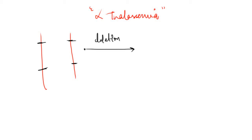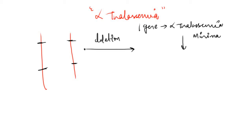Depending upon how many genes are deleted, there are various manifestations. If one gene is deleted, there will be mild decreased production of alpha chain and that is called alpha thalassemia minima. One alpha gene is deleted but the three other genes are functioning, so the production of HbA is minimally decreased and the patient will be asymptomatic — the anemia will not manifest clinically.